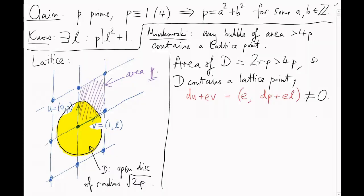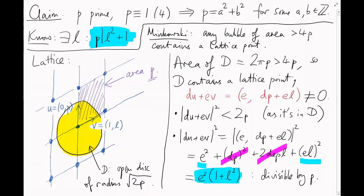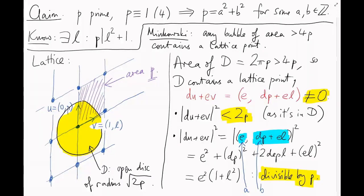Now, here's where the careful choice of the lattice comes in. We'll calculate the square of the distance of this point from the origin. It must be less than 2p, because the point is inside the disk. On the other hand, we can work it out directly. The norm of du plus ev squared is e squared plus (dp squared) plus 2depl plus (el squared). Okay, now this term is divisible by p, and this term is divisible by p, and what we have left is e squared times (1 plus l squared), which is also divisible by p, because of how we chose l. So, if you square and add the pair of numbers e and (dp + el), you get something divisible by p, but not 0, and less than 2p. So it must be p. So these are our numbers a and b, and that's the end of our proof.